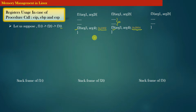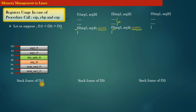Let us discuss how the stack frame of f1 looks at the instant when f1 was executing. In this diagram the numbers on the left-hand side represent the addresses of stack memory, which decrease downwards. In this stack frame of f1, we first push the arguments of f1 in reverse order, then the return address of the caller (function f0), then the base pointer register value of the caller (f0), and finally the local variables of f1.